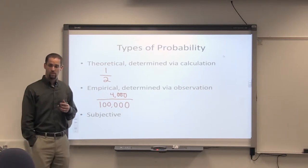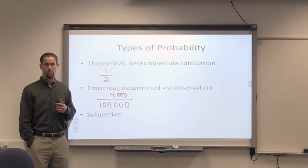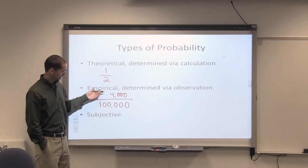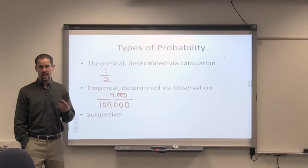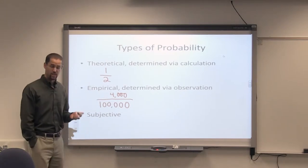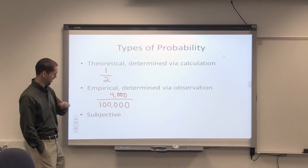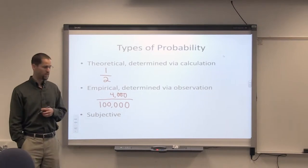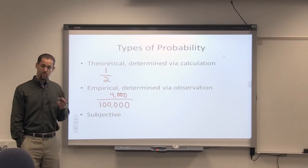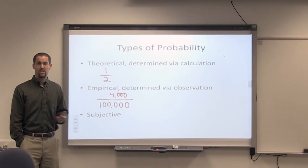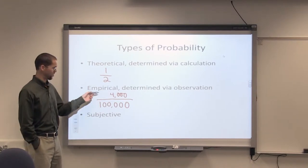That's an empirically determined probability. 4,000 out of 100,000 had an accident. The other 96,000 did not have an accident. Unfortunately, in the first year they're paying just as much as the ones who did have an accident.